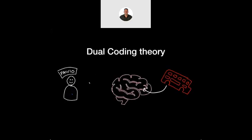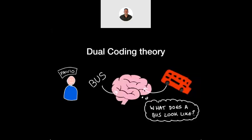So briefly, let's have a look at dual coding theory. Pavio came up with this concept of dual coding. And the idea is, if we just take the word 'bus,' then we just recall the word bus. If we turn that word into an image, then we've actually had to process the word in our brains, which means there's more chance of us being able to understand what it means.